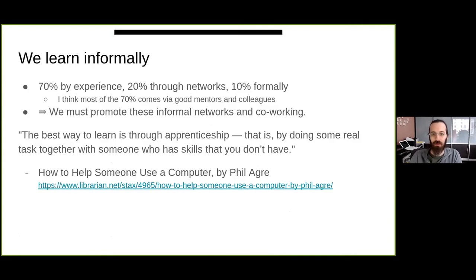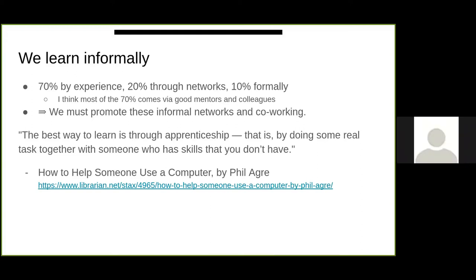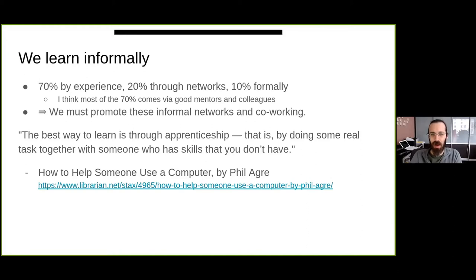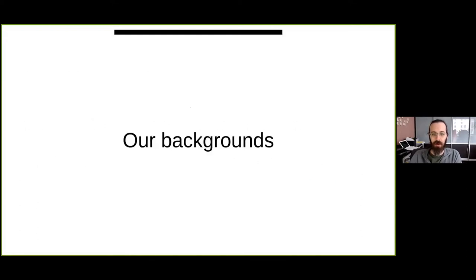One basic principle is that we learn informally. We learn 70% by doing things, 20% through networks, and 10% formally. That means we have to promote informal networks and co-working in order to teach people well. There's a list I once came across about how to help someone use a computer, and one of the ideas was that the best way to learn is through apprenticeship — doing real tasks together with someone who has skills you don't have.